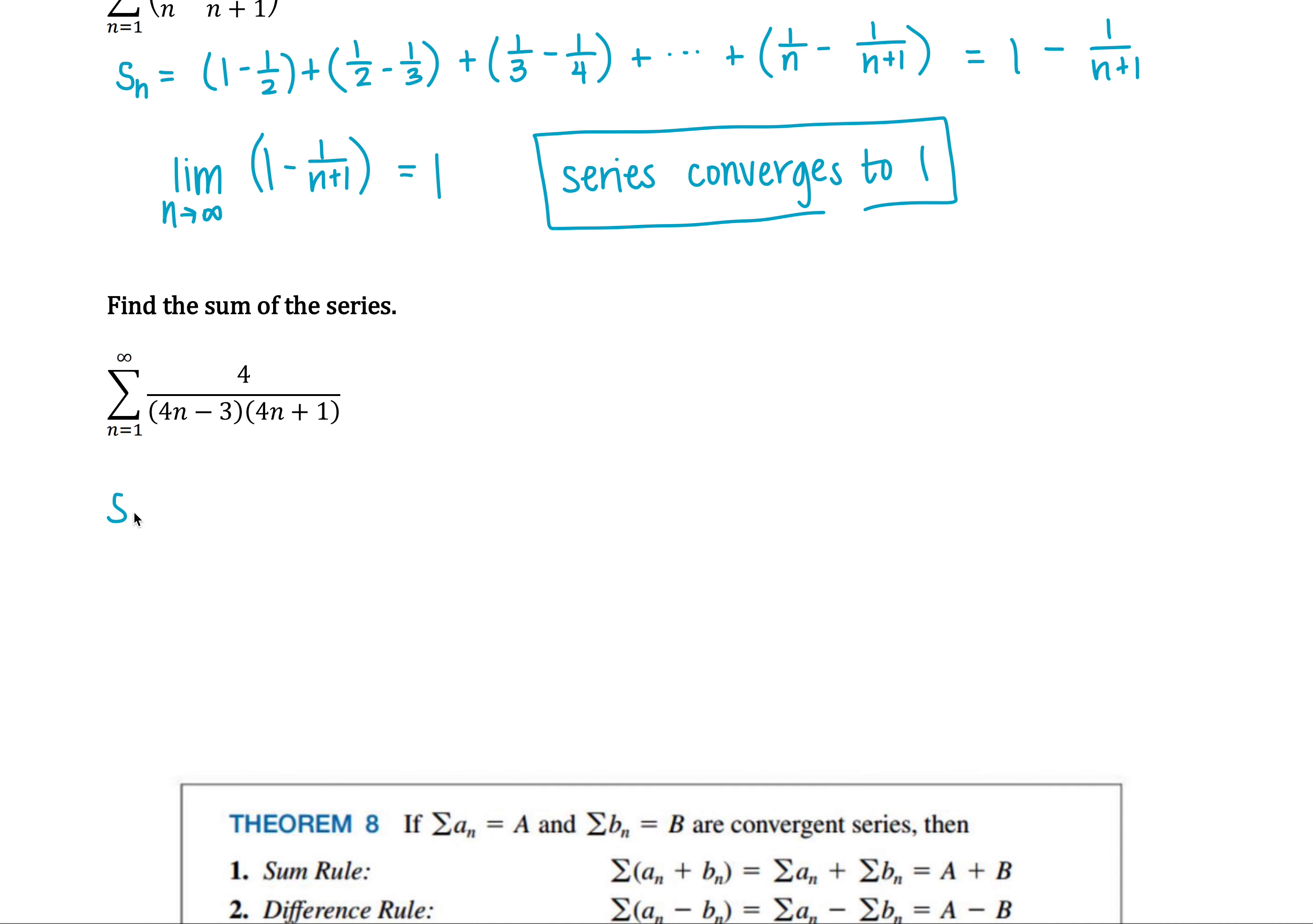The first partial sum, when we're just looking at n is 1, you would get 4 fifths.